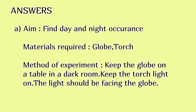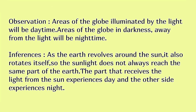Answers. A. Aim: Find day and night occurrence. Materials required: globe, torch. Method of experiment: Keep the globe on a table in a dark room. Keep the torch light on. The light should be facing the globe. Observation: Areas of the globe illuminated by the light will be daytime. Areas of the globe in darkness, away from the light, will be nighttime.